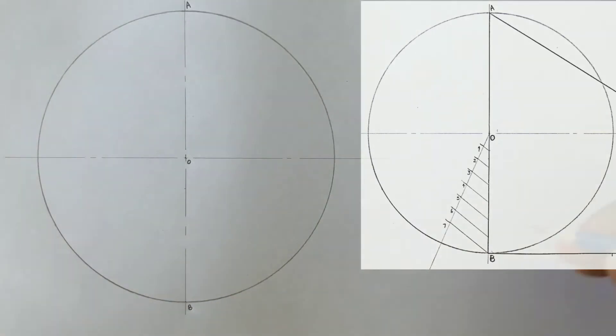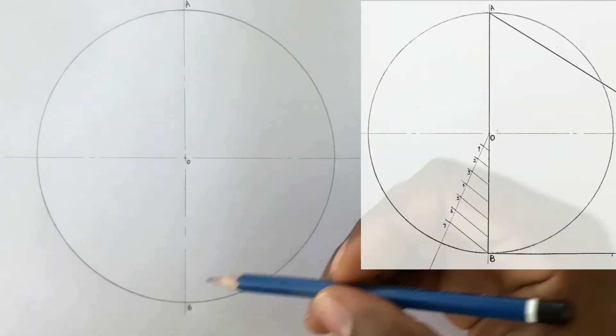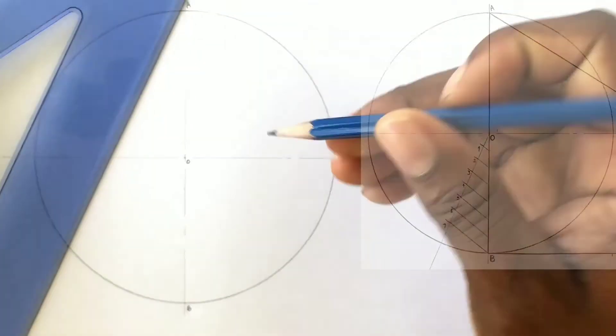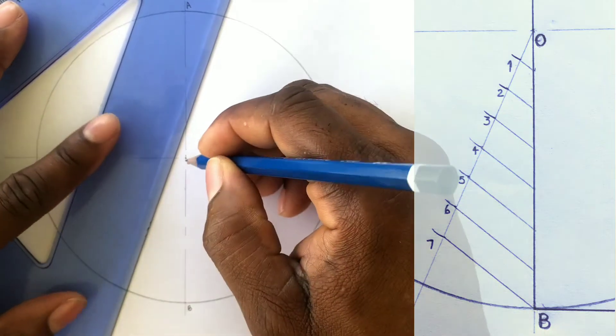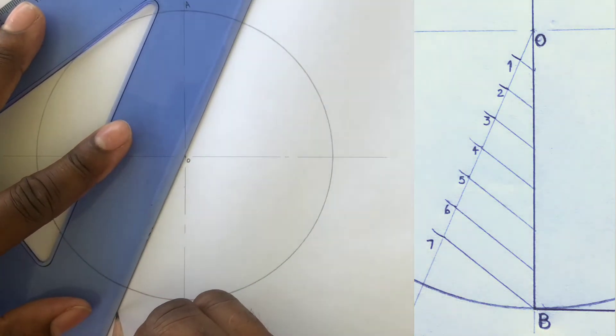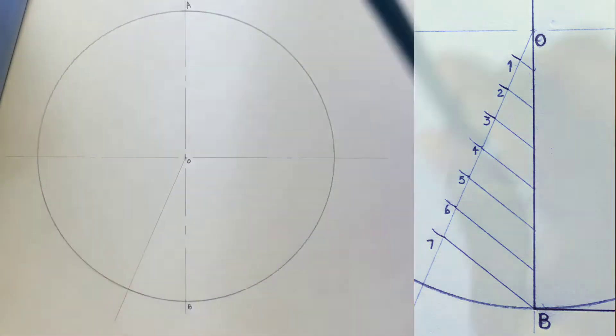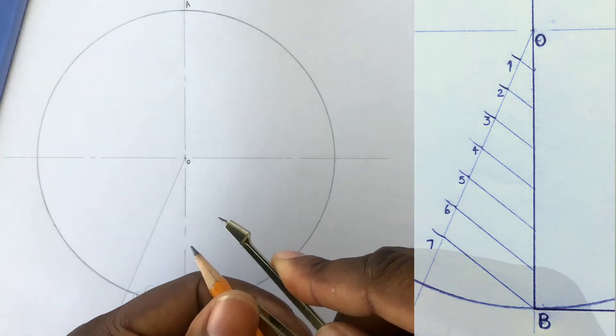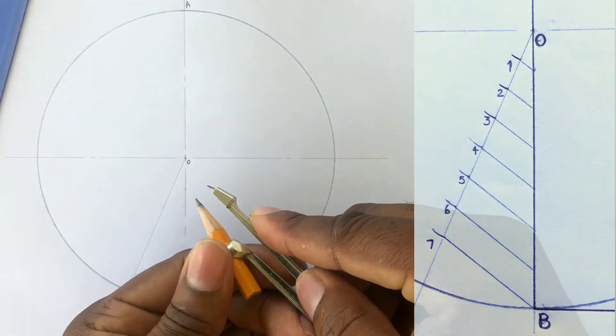You will now divide OB, which is the radius of the circle, into seven equal parts. Draw a line from O at a convenient angle to you. Then open your compass to a very small convenient radius, one convenient to you.